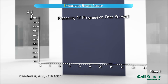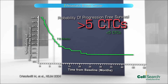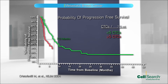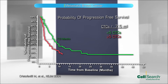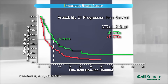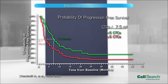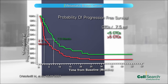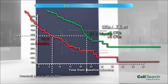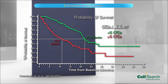Clinical studies with the CellSearch system have demonstrated that the presence of five or more CTCs in 7.5 millilitres of blood before the initiation of any line of therapy is highly predictive of short progression-free survival and short overall survival in patients with metastatic breast cancer.